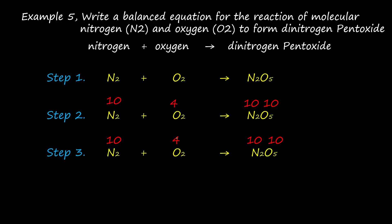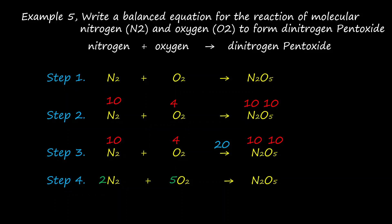The third step: find the LCM of 10 and 4 — the LCM is 20. Write the LCM above the arrow. The fourth step is to divide the LCM by each total valence number. Divide 20 by 10 for nitrogen — that is 2 — write coefficient 2 for nitrogen. 20 divided by 4 for oxygen equals 5 — write coefficient 5 for oxygen. 20 divided by 10 for dinitrogen pentoxide equals 2 — write coefficient 2 for dinitrogen pentoxide.